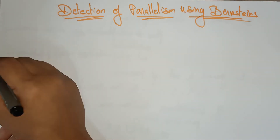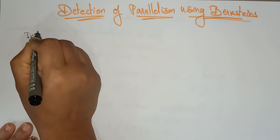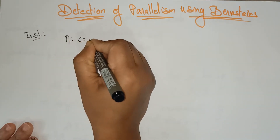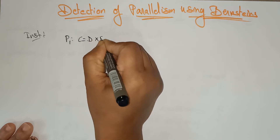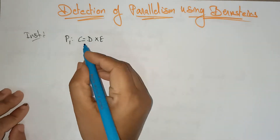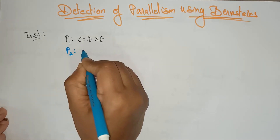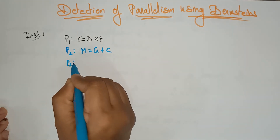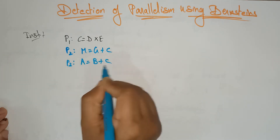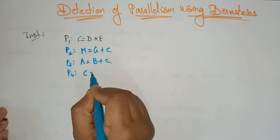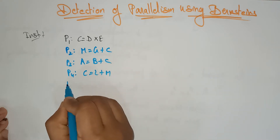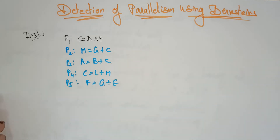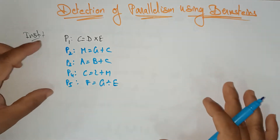Let me take some instructions. P1: C = D × E. P2: M = G + C. P3: A = B + C. P4: C = L + M. P5: F = G / E. These are the instructions.